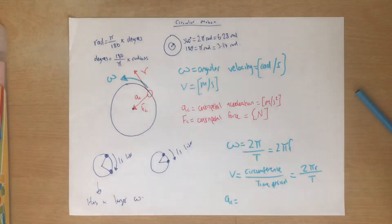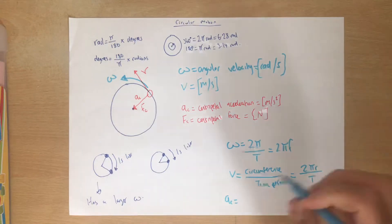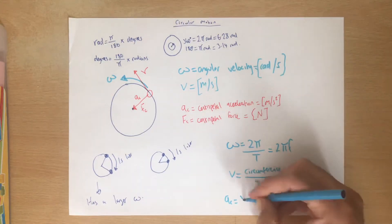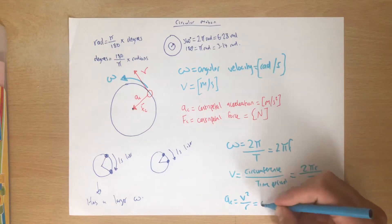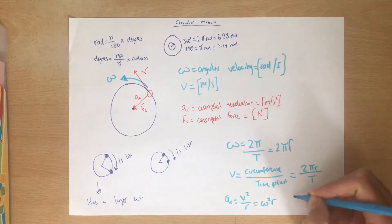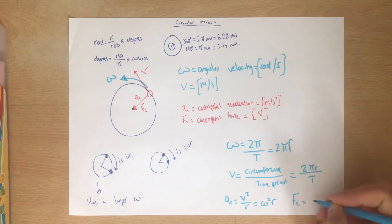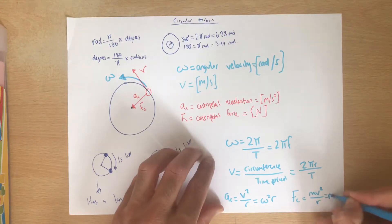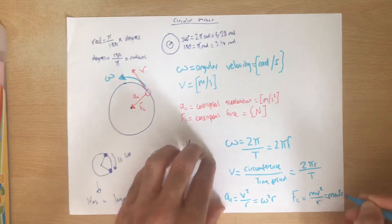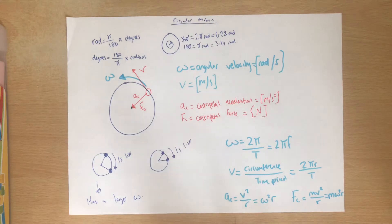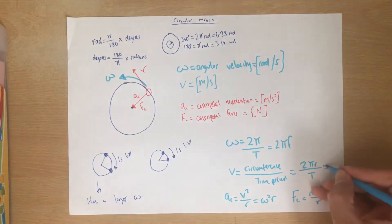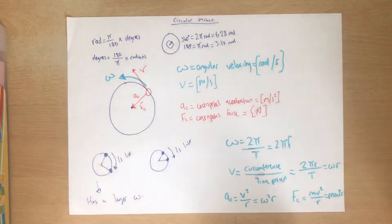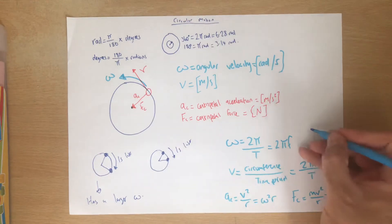Acceleration is given by v squared over r or omega squared r, and Fc is given by mv squared over r or m omega squared r. So we've got a range of different equations here which we can use, and this one over here is also omega r. There's a range of different equations to use here and this one over here is pretty key as well.